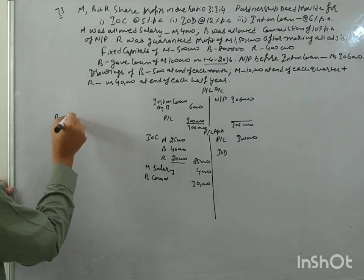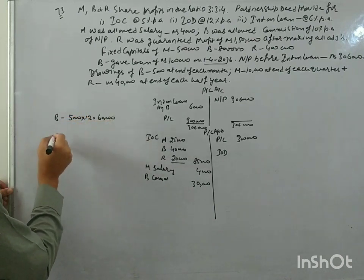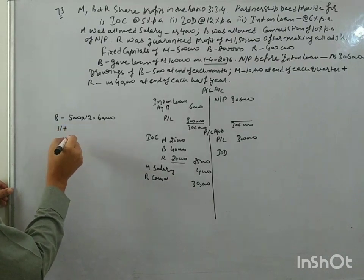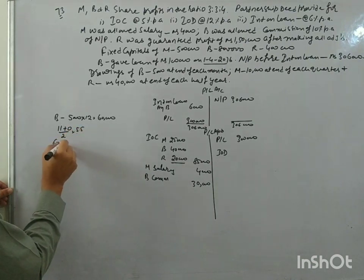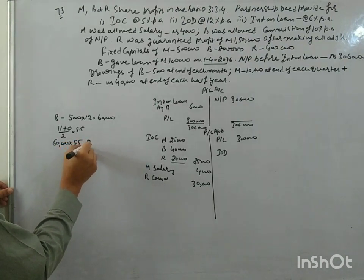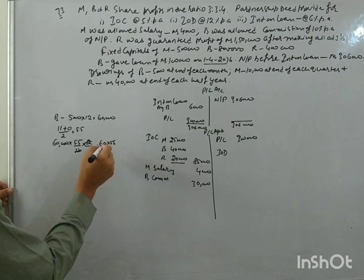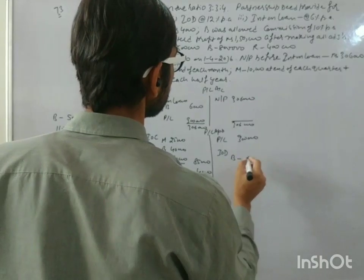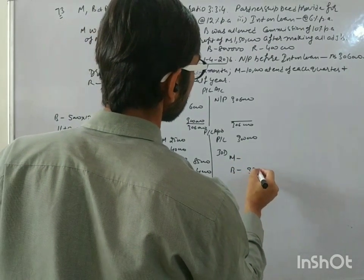B has withdrawn 5,000 at the end of each month, that is 12. So 60,000 is the amount. Now time period - time left after first drawing, that is 11, and time left after last drawing is 0. That is 5.5 months. So interest on drawing, 60,000 into 5.5 divided by 12 into rate of interest 12%. So that is 60,000 into 5.5, that turns out to be 33 hundred. And B is 3,300.